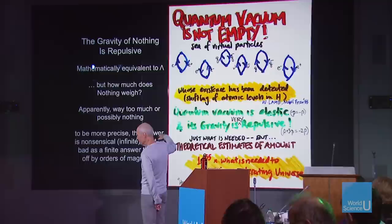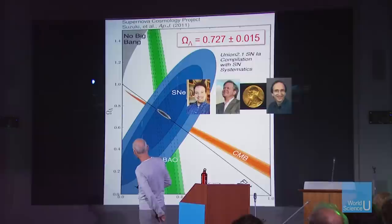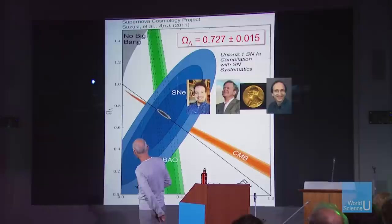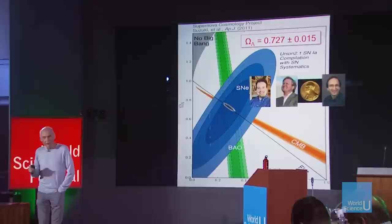We've calculated it and we've almost got the right answer — we're only off by 10 to the 55. Actually, the answer we get is infinity, and infinity is not a number, so our answer is not wrong because we haven't gotten an answer. This vacuum energy is mathematically equivalent to what Einstein called the cosmological constant. He put it in his equations to get a universe that didn't expand, but in principle the energy of the vacuum is there because the vacuum is filled with virtual particles.